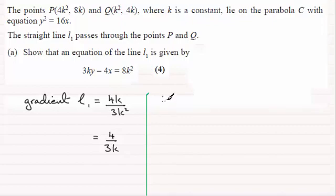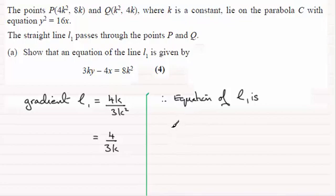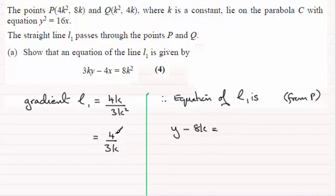Now that we've got the gradient, therefore the equation of L1 — using the usual form y minus y1 equals m bracket x minus x1 — it's going to be: taking point P, y minus y1, that's y minus 8k, equals the gradient m which is 4 over 3k, times x minus x1, which is 4k squared.